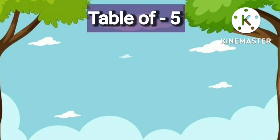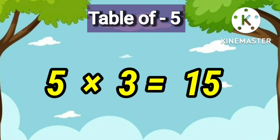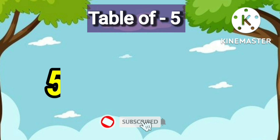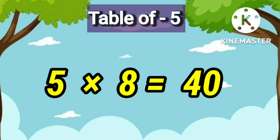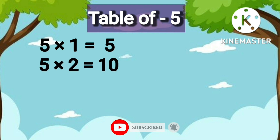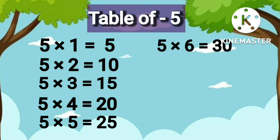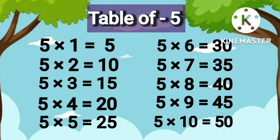Table of 5: 5 1's are 5, 5 2's are 10, 5 3's are 15, 5 4's are 20, 5 5's are 25, 5 6's are 30, 5 7's are 35, 5 8's are 40, 5 9's are 45, 5 10's are 50.